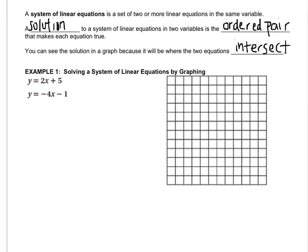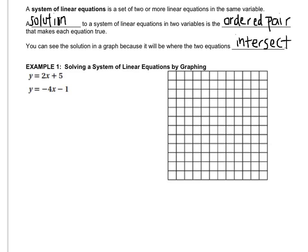So let's remember how to graph. First, you need the slope and the intercept. So the slope for this one is 2, and the intercept is at (0, 5). The slope for this one is negative 4, and the intercept is negative 1. Now remember, you can also put your slopes over 1 to turn them into a fraction.